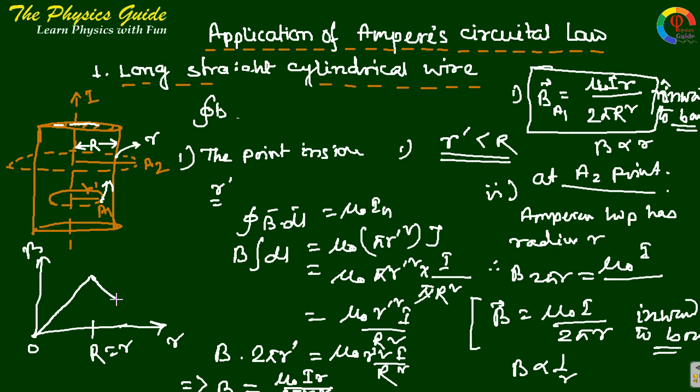On the graph, the decreasing portion corresponds to B proportional to 1 over R, and the increasing portion corresponds to B proportional to R.